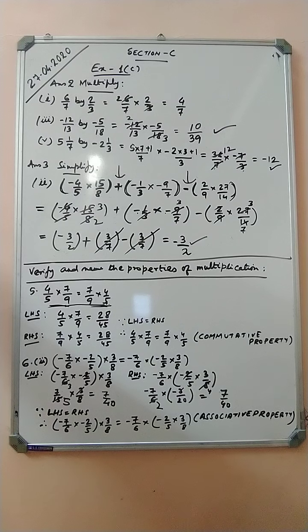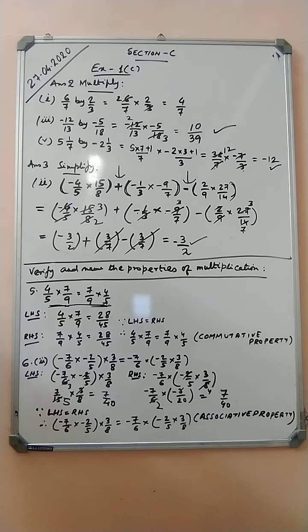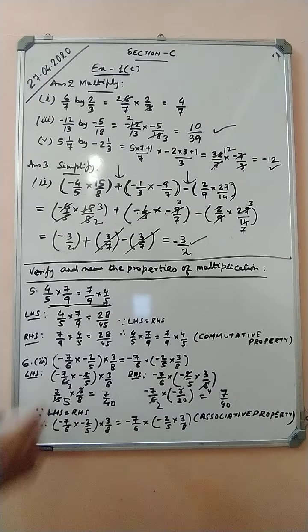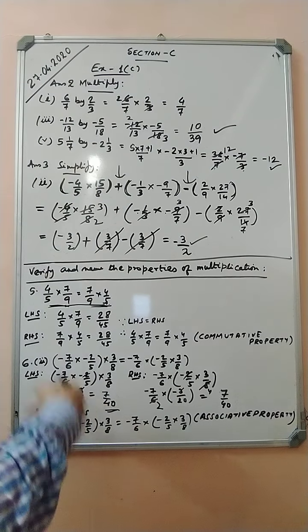Question number six: minus seven by six, into the bracket minus two by five, into three by eight, equals minus seven by six into the bracket minus two by five into three by eight. Solving the LHS: first solve the inner bracket — minus two by five into three by eight gives three by twenty. Then minus seven by six into three by twenty simplifies: 6 and... gives seven by forty.